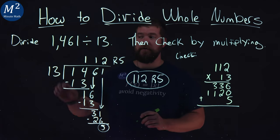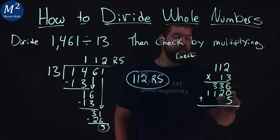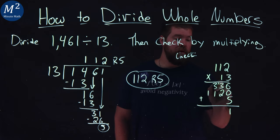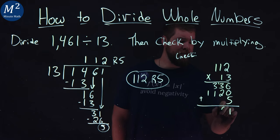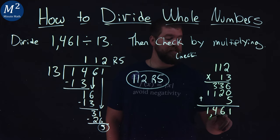We're going to add these numbers up. We should get 1,461. 6 plus 0 is 6. Plus 5 is 11. 1 carry the 1. 1 plus 3 is 4. Plus 2 is 6. 3 plus 1 is 4. And 1 by itself is 1. We got 1,461.